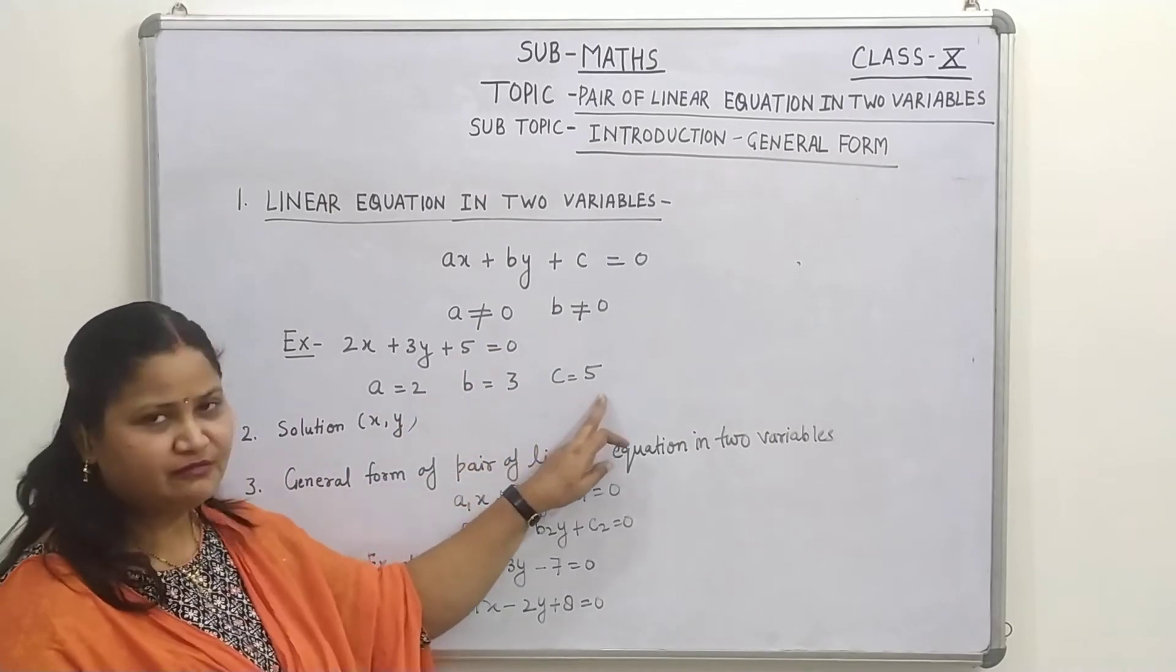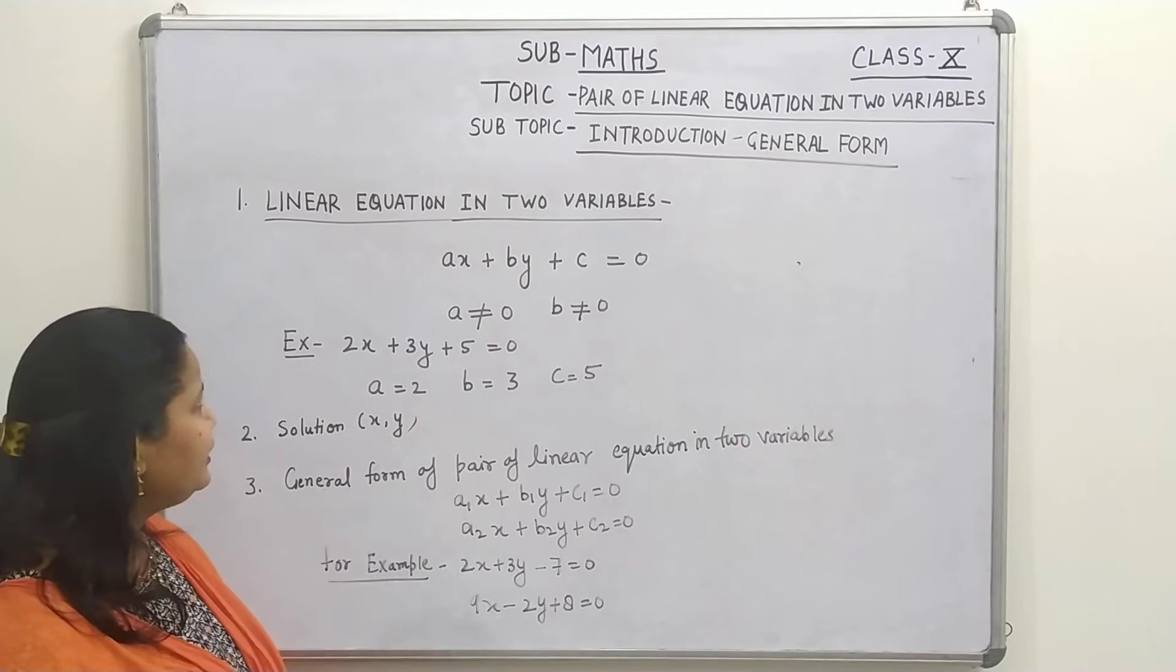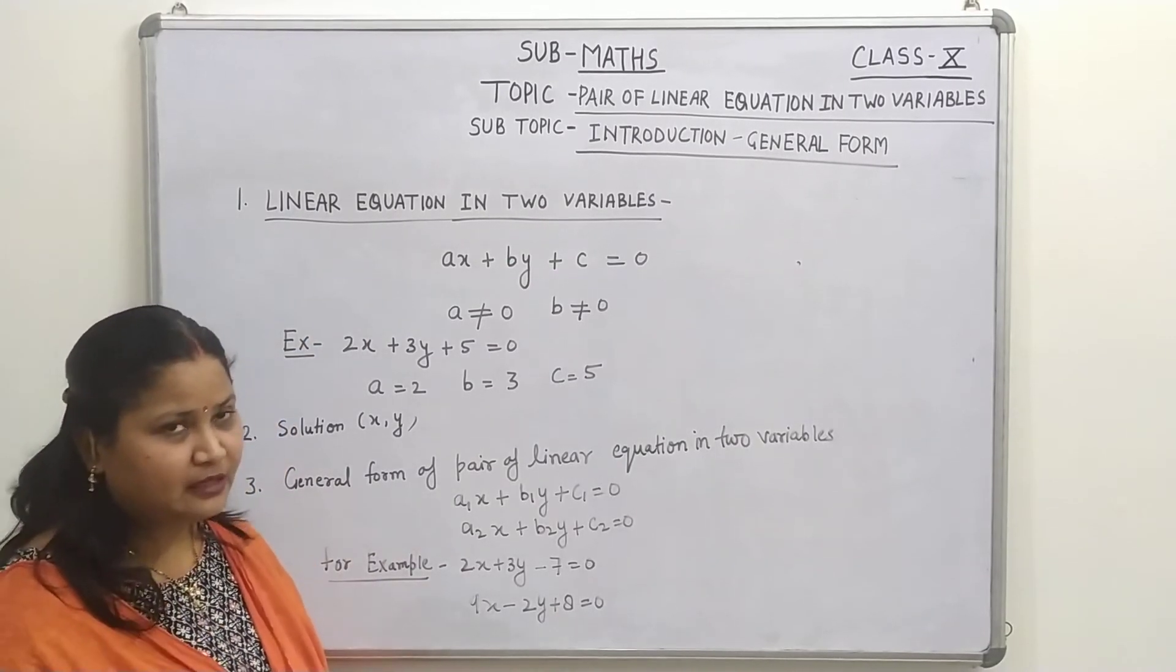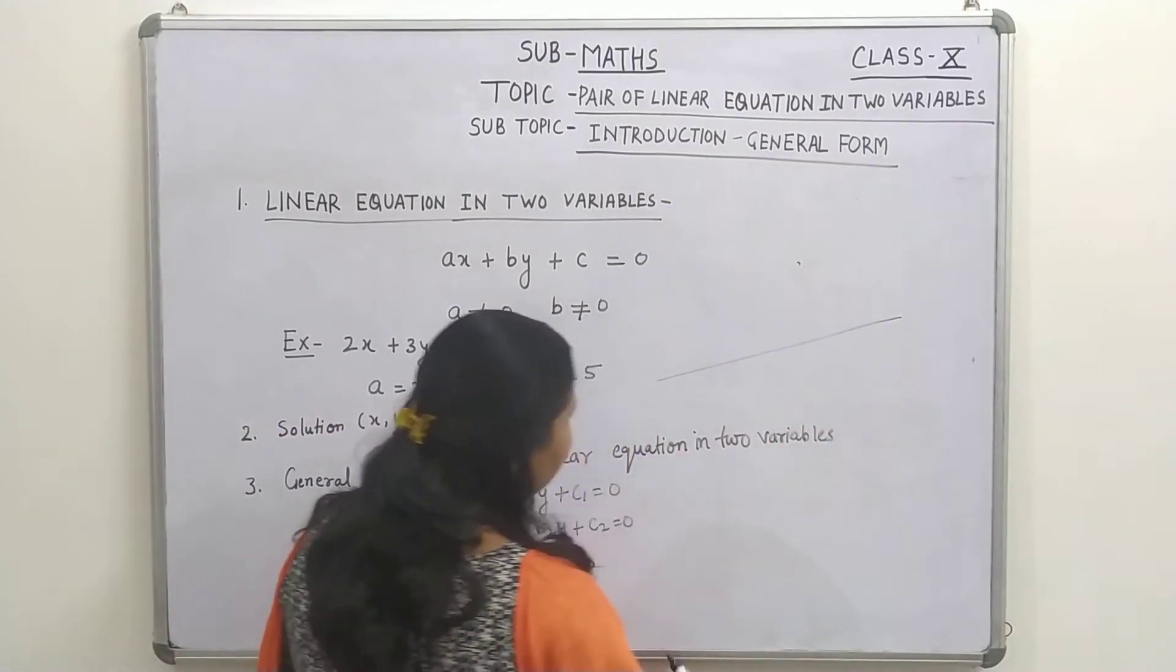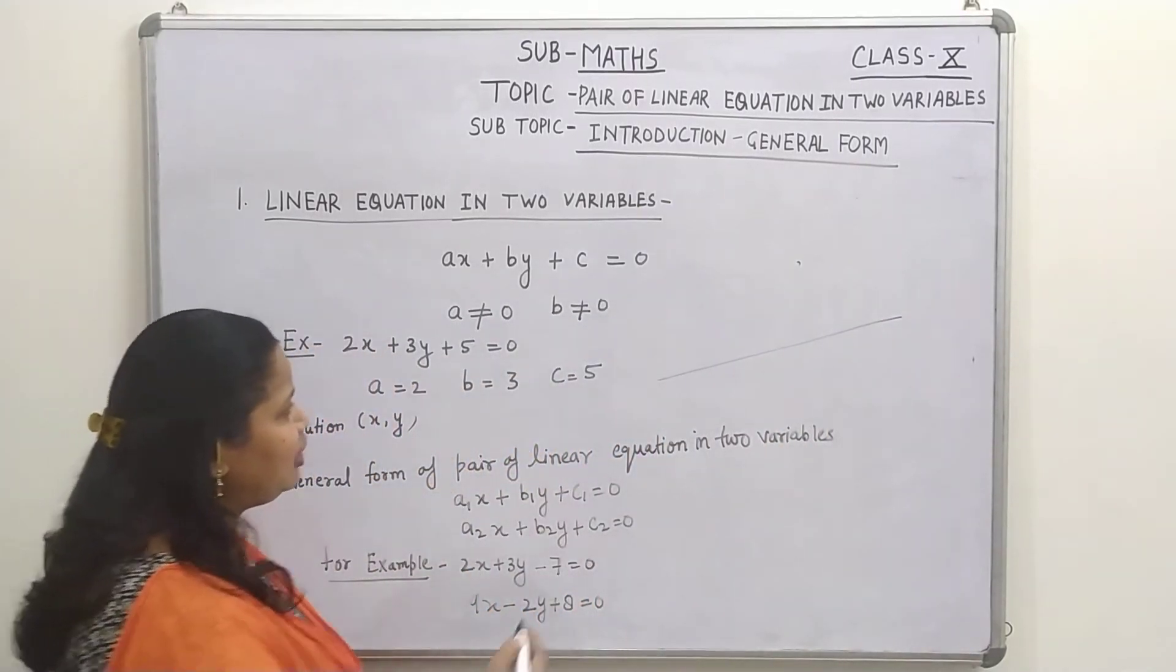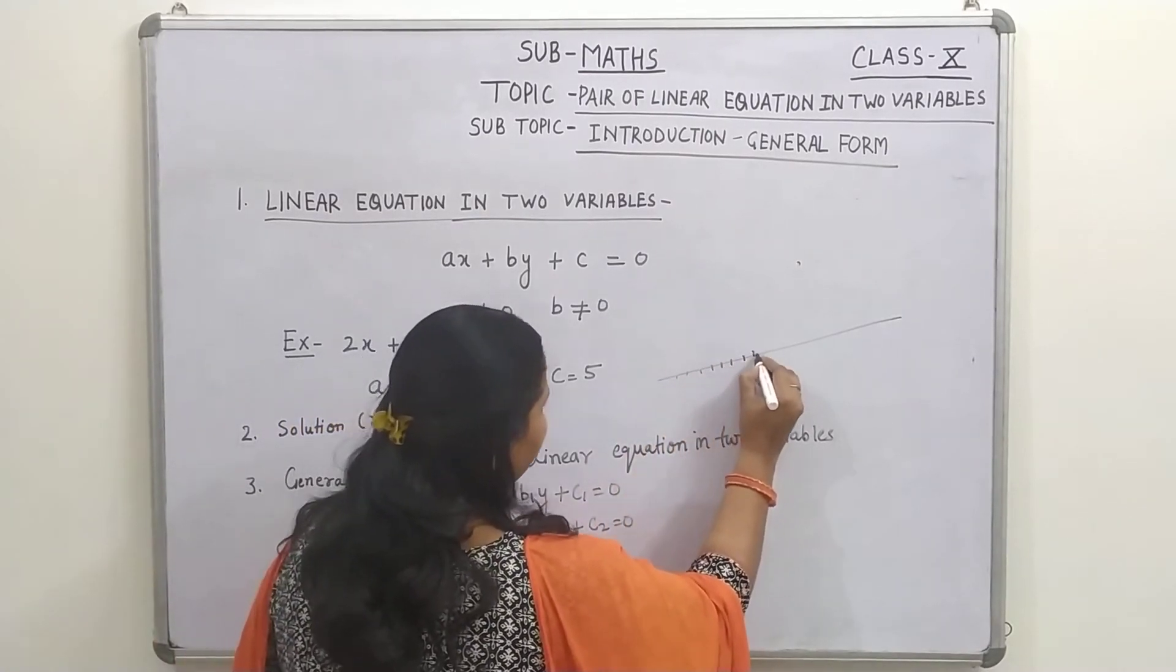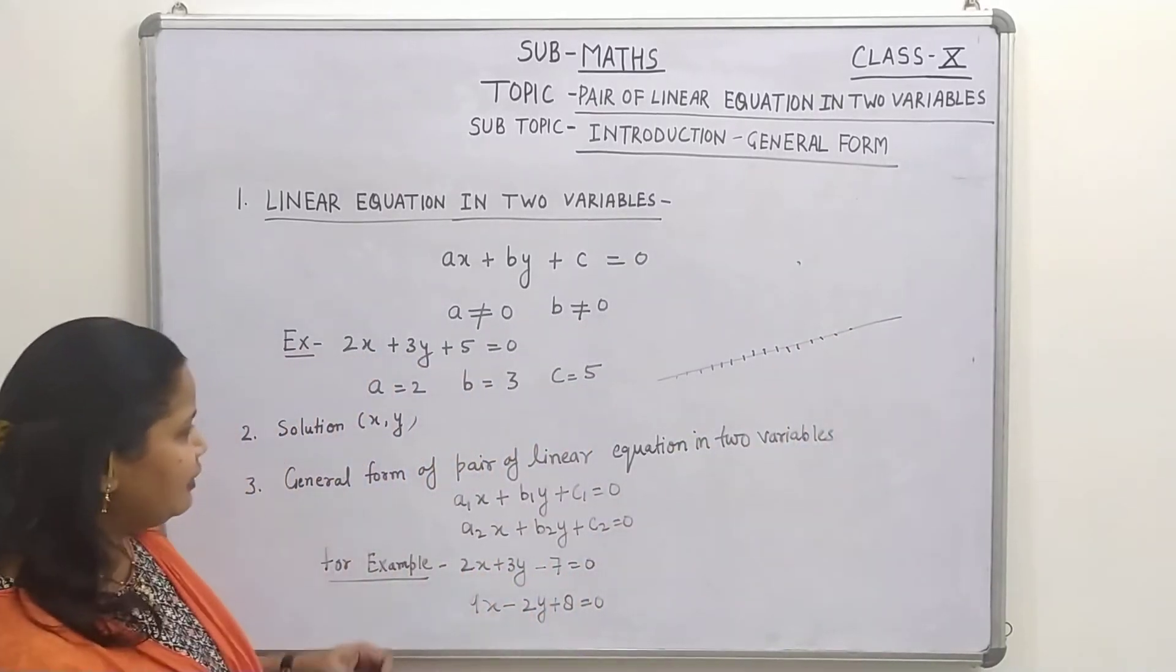And the constant term is 5, so C equals to 5 here. And children, you already know that a linear equation in 2 variables, if we make a graph of this equation, we always get a straight line. And all the points which may appear on this straight line will be the solution of this equation.